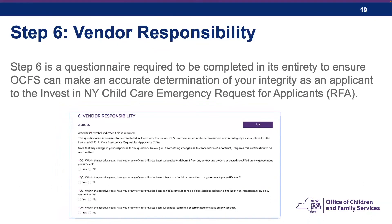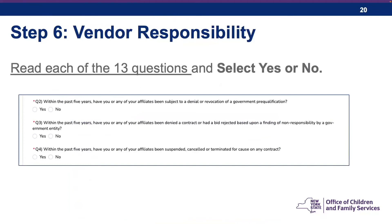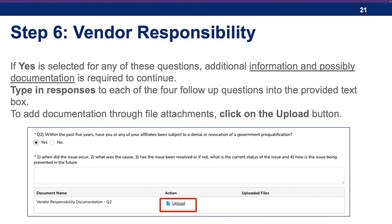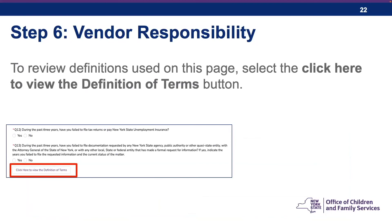Step six is a questionnaire required to be completed in its entirety to ensure OCFS can make an accurate determination of your integrity as an applicant to the Invest in New York Child Care Emergency Request for Applicants. Answer yes or no to each of the 13 questions. If you select yes to any question, you will be required to enter additional information or upload documentation. Type your responses into the provided text box, and to add documentation, click the Upload button. To review definitions used on this page, select the "Click Here to View the Definition of Terms" button. Then read through each certification statement and complete the necessary information in the Open and Operating section. When complete, click Save and Next to move to Step 7.